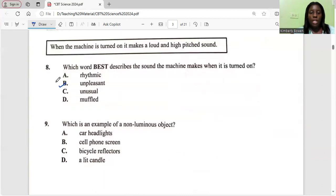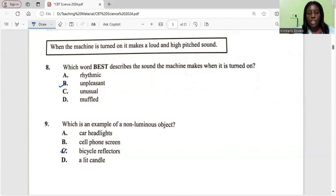Which is an example of a non-luminous object? Non-luminous means that it doesn't create its own light. A lit candle is luminous, the cell phone screen creates its own light, and a headlight creates its own light. With a bicycle reflector, if there's no light shining on it it doesn't emit its own light. So therefore it's not a source of light and as the word suggests, reflector, it's reflecting other light sources. So the answer is C.